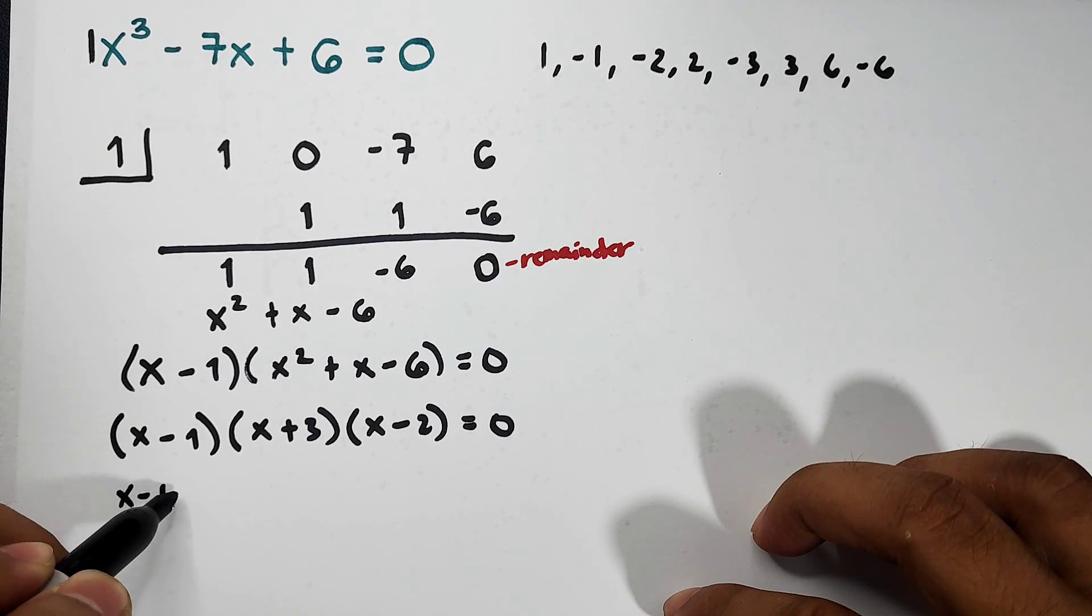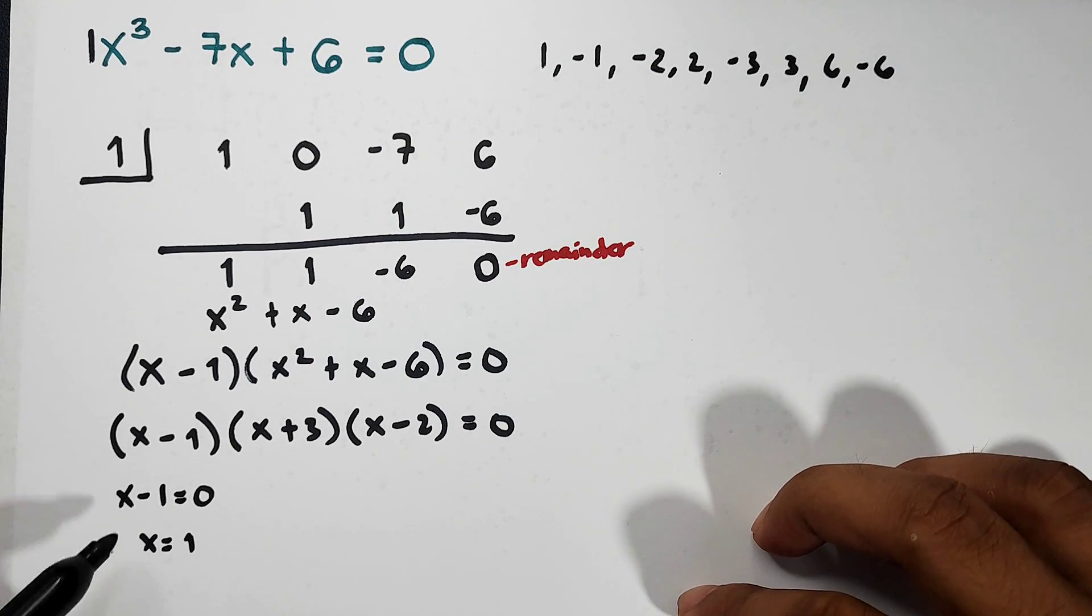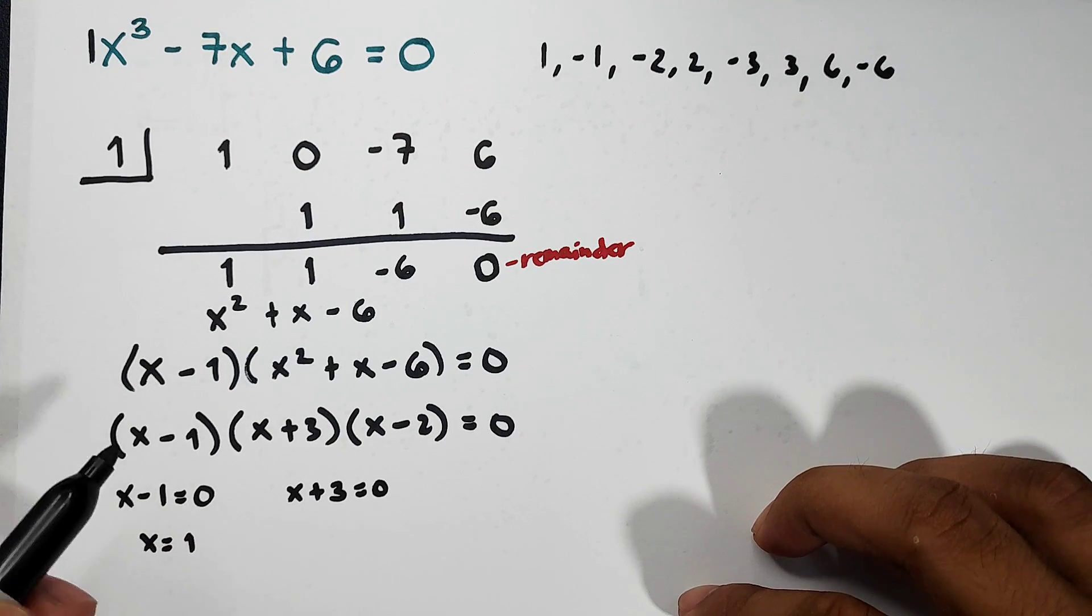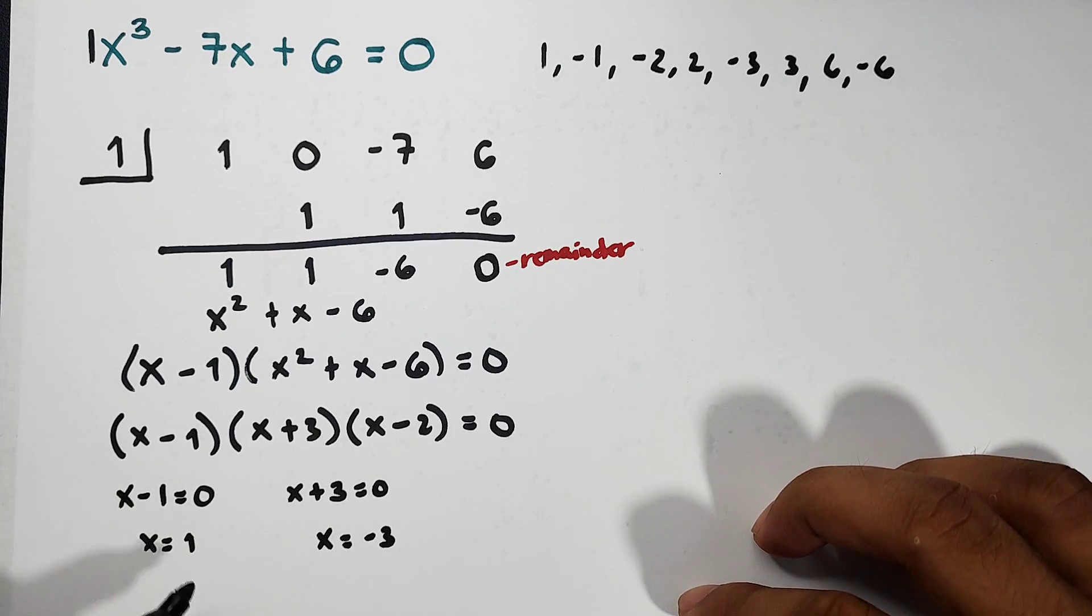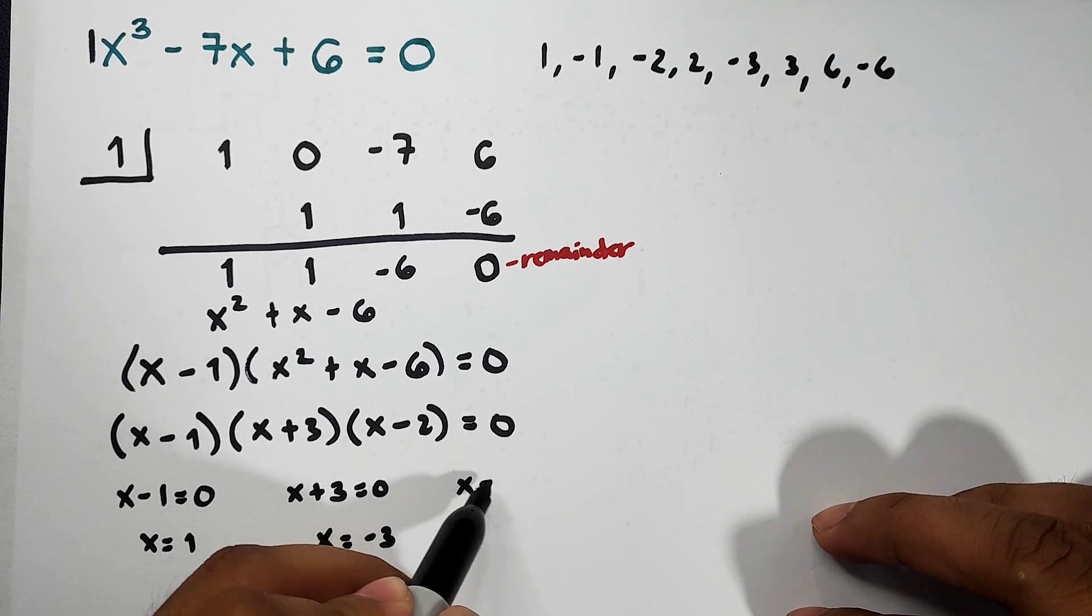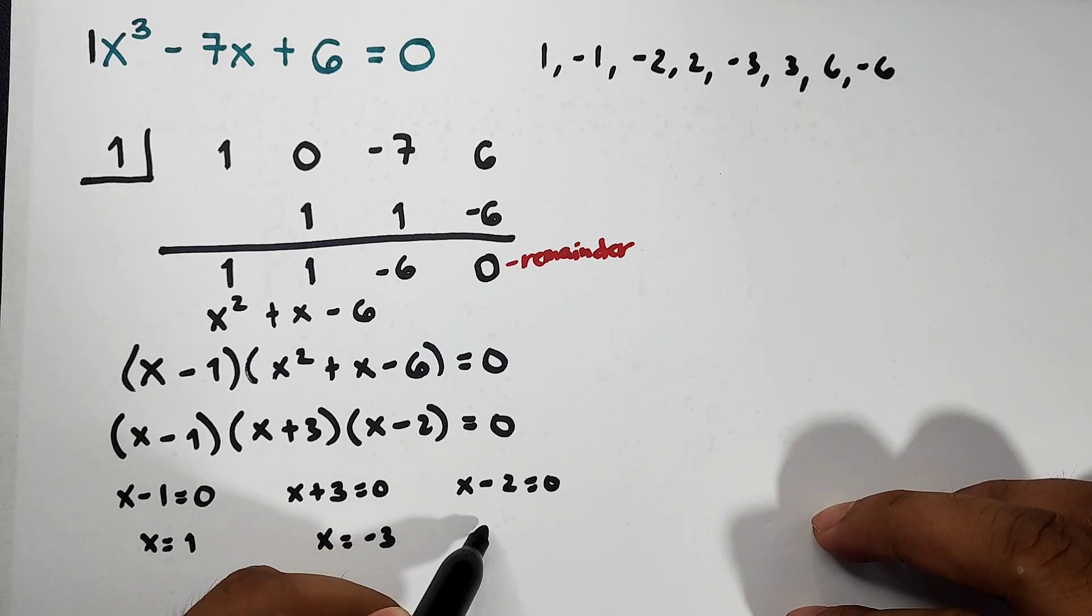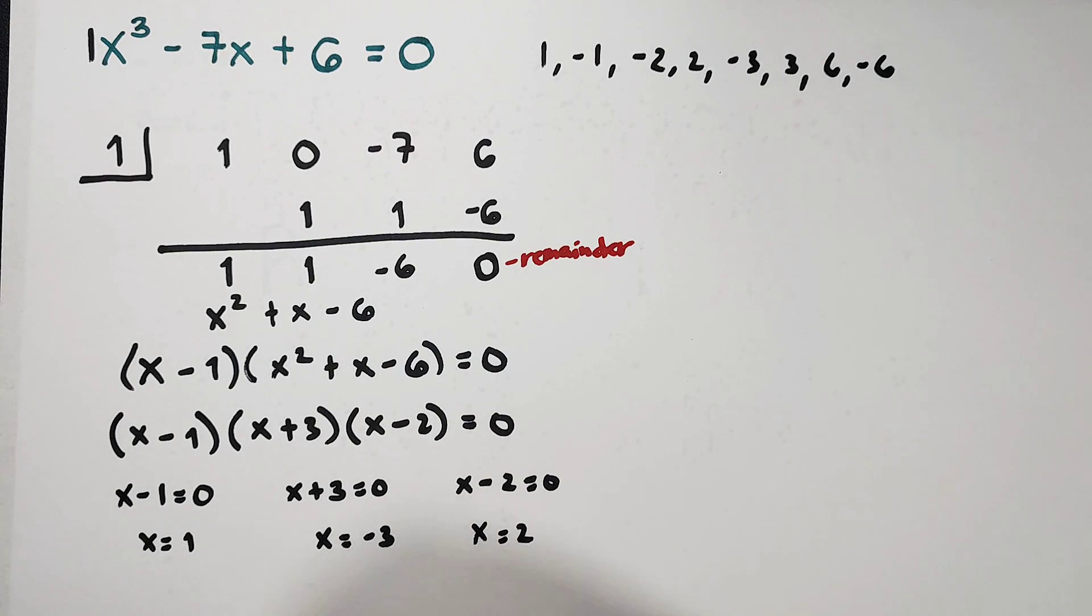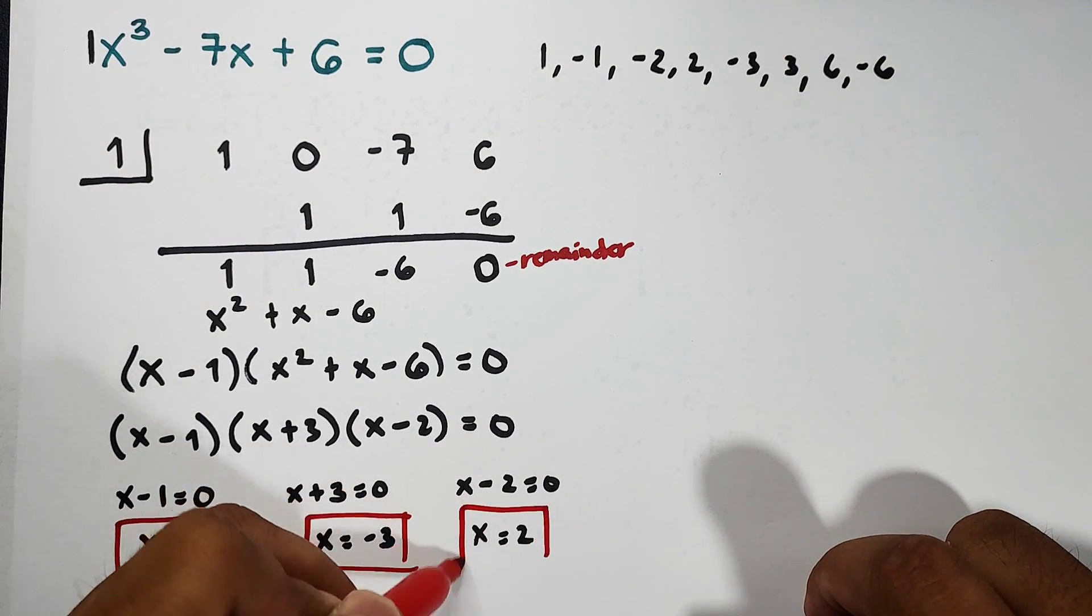Now if these are the factors, what will happen is: x minus 1 equals 0, we got this earlier, x equals 1. This is the first root. Second factor: x plus 3 equals 0. Equate all to 0. Solving for x, x equals negative 3. Third factor: x minus 2 equals 0. Solve for x, transpose it, x equals 2. So these are the roots: 1, negative 3, and positive 2. So there you go guys, there are many different ways on how to solve this one.